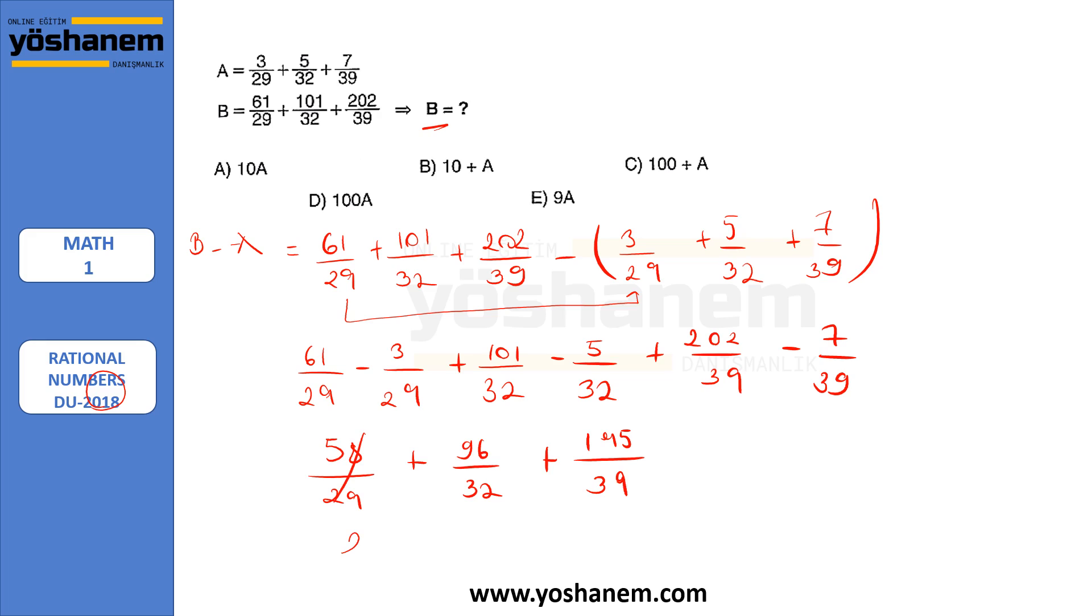So let's divide them. It's gonna be 2 if we divide it by 29. If we divide 96 by 32, I'll have 3 and here I'll have 5. So my answer is 10. So B minus A is 10. And it asks us B. In order to get B, I need to do this: 10 plus A. And this is my answer, B.